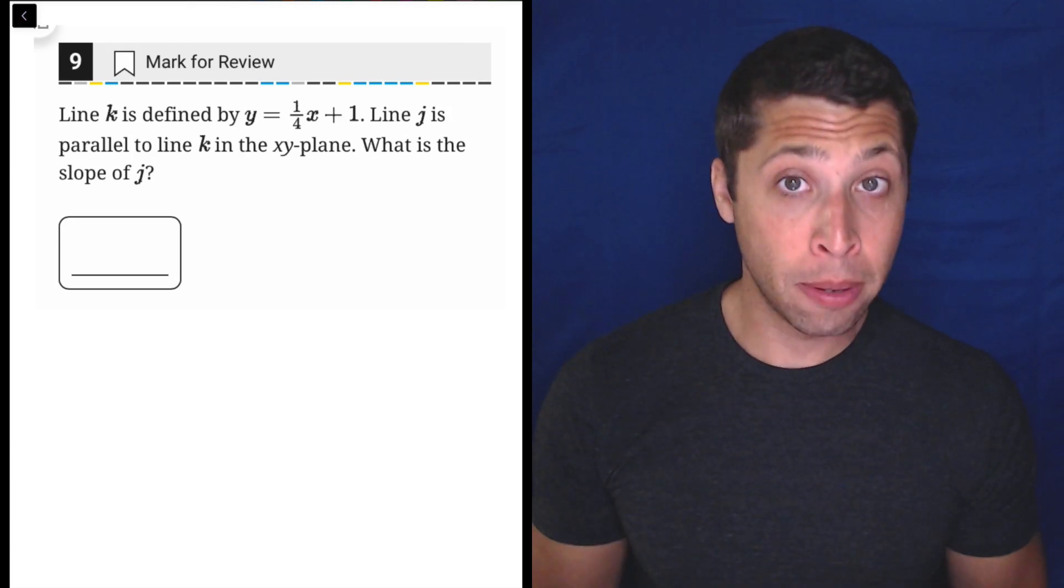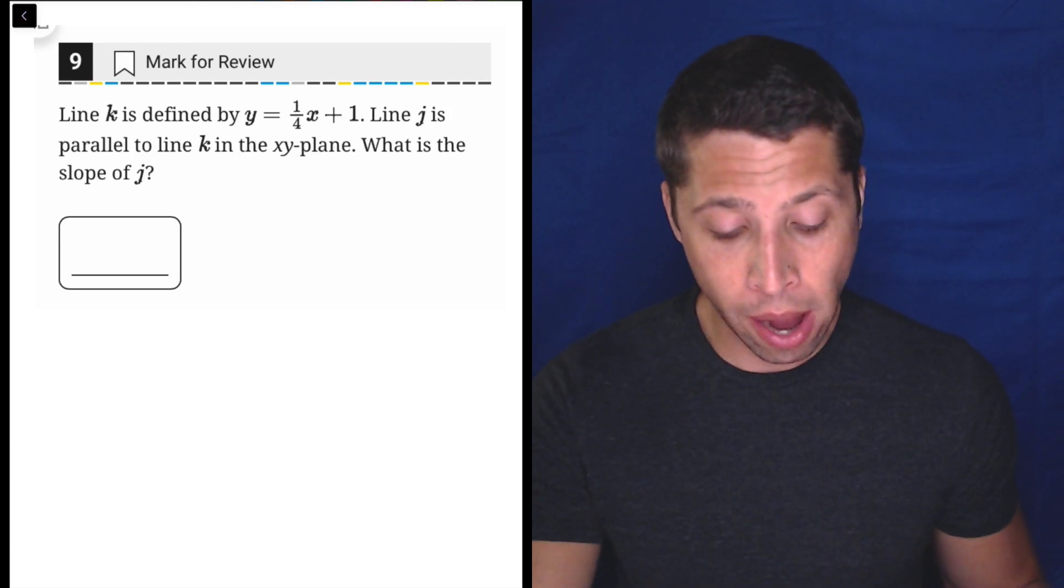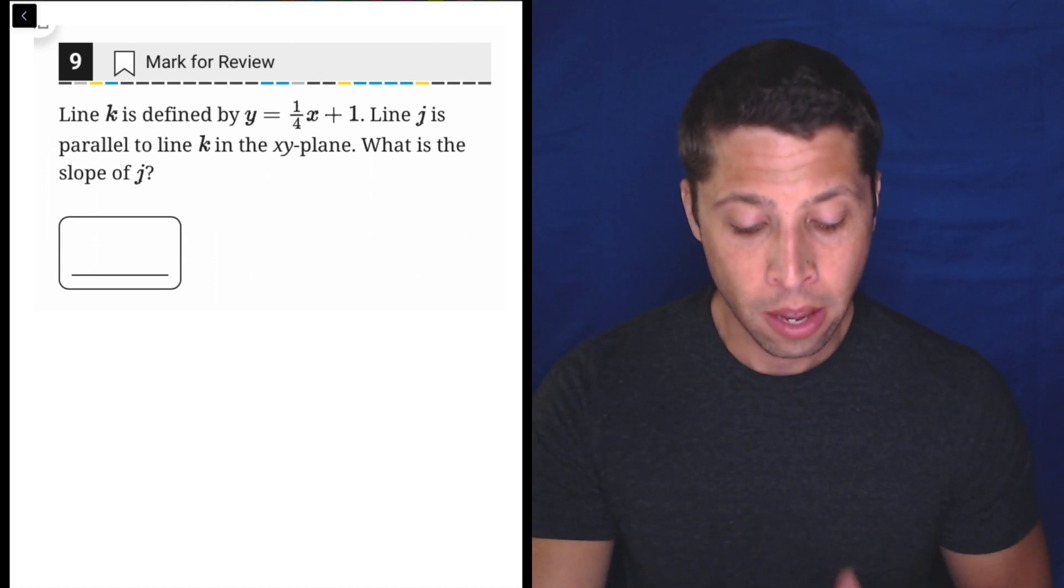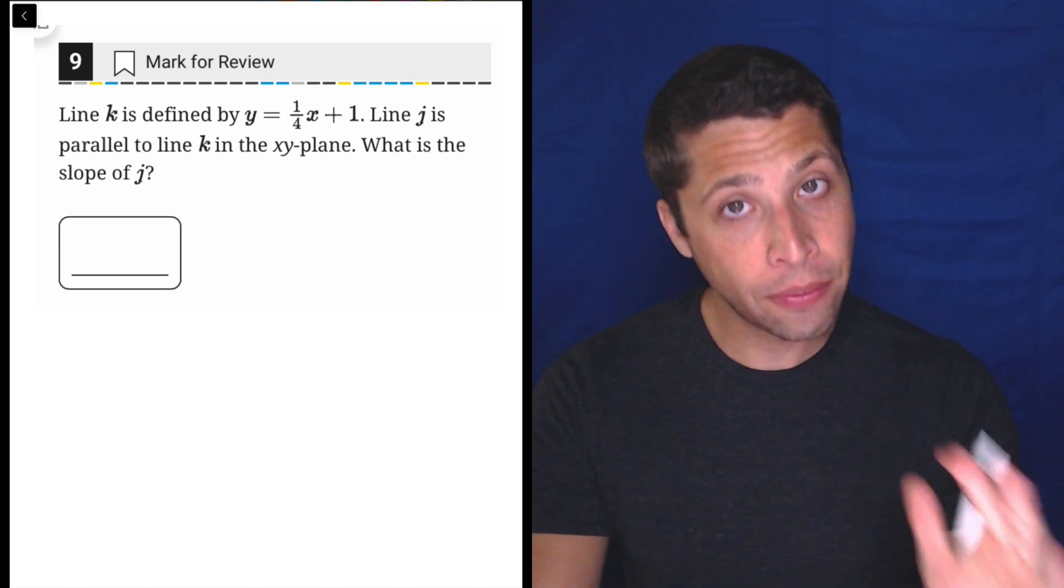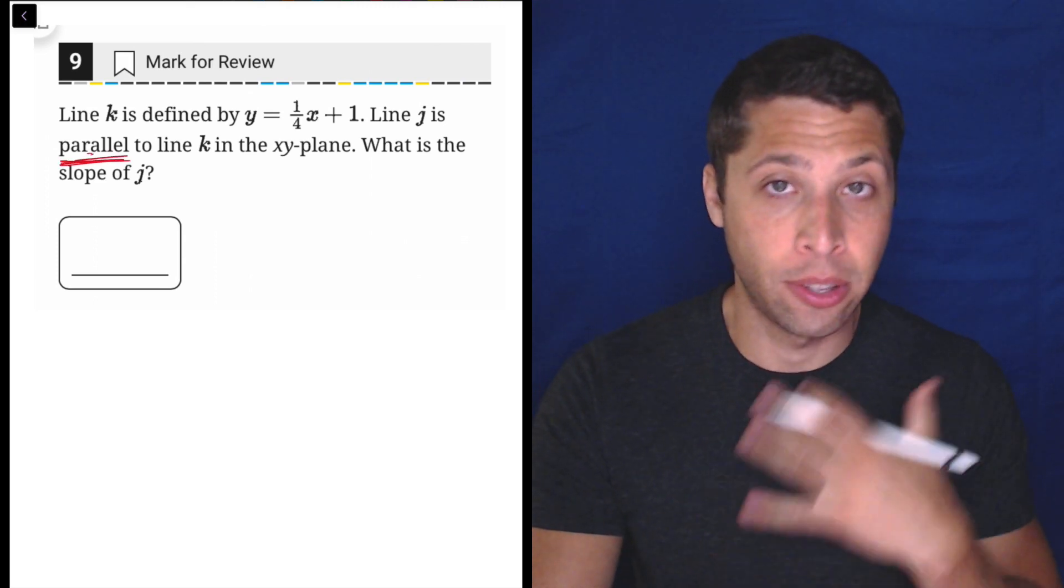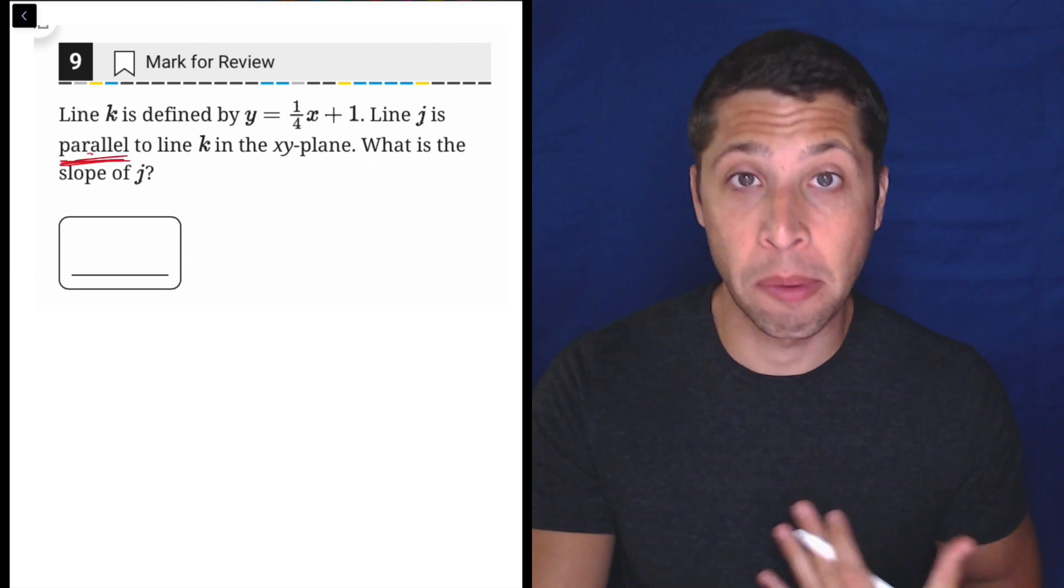This is much more of a vocabulary question for math rather than actually solving anything. We just need to understand what they're saying. They're giving us a line, they're asking about another line, and specifically they're telling us that line J is parallel to line K.